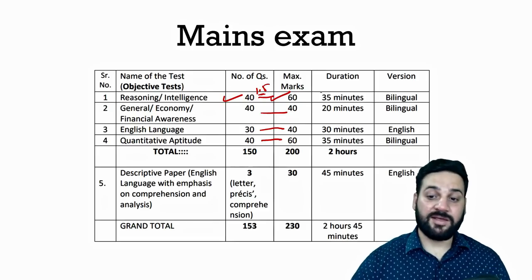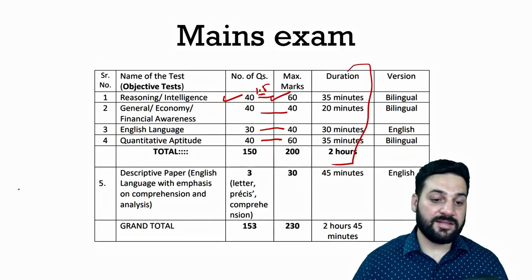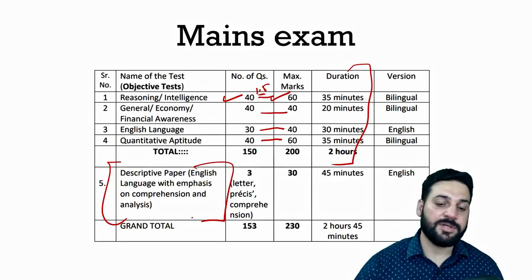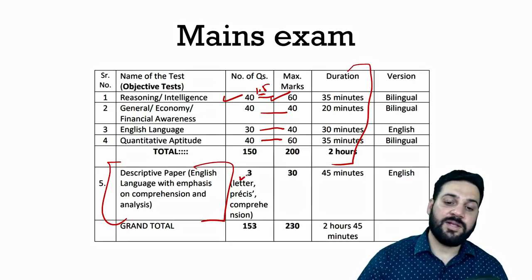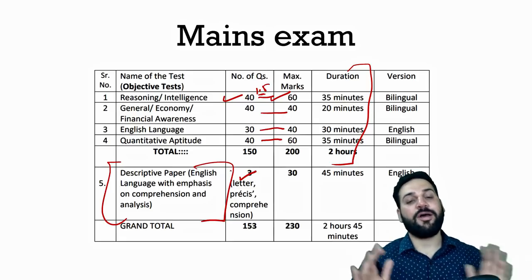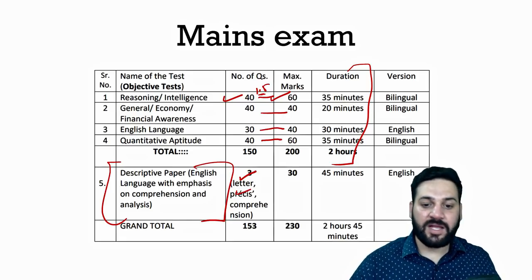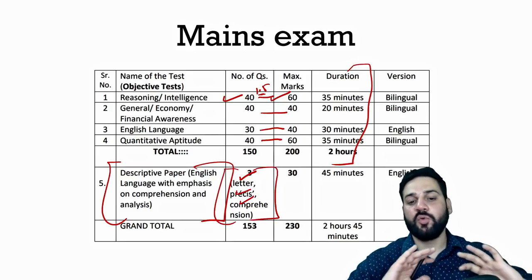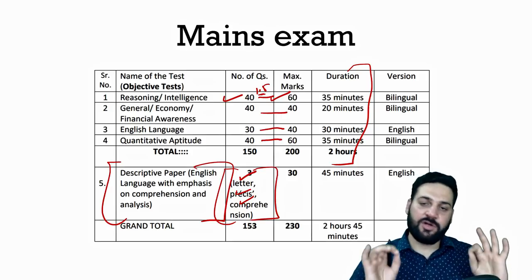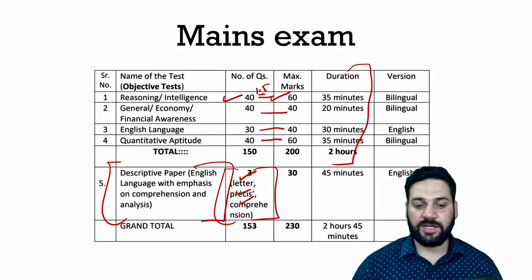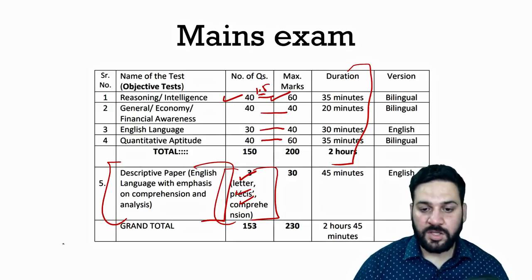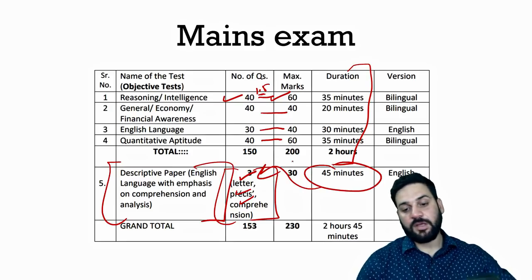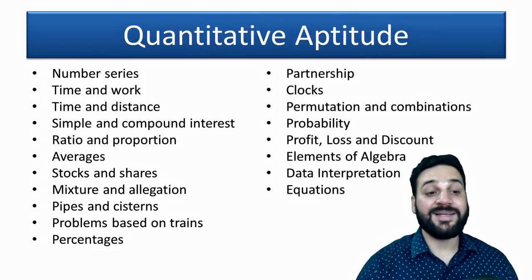There is sectional timing of two hours for the Mains, and then there is a Descriptive Paper. The descriptive paper syllabus includes one letter writing (either formal or informal), a précis writing, and a reading comprehension. You need to complete these three questions within 45 minutes. Links to study material for all these will be provided in the description.